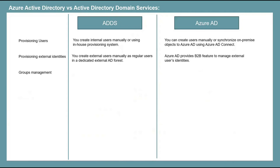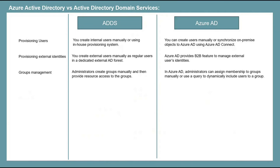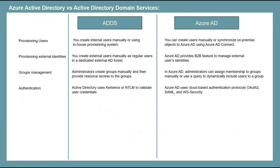In on-premise Active Directory, administrators add members to groups manually and then resources are assigned to those groups. But in Azure Active Directory, administrators can use a query to dynamically include users in groups. On-premise Active Directory uses either Kerberos or NTLM to validate user credentials, whereas Azure Active Directory uses cloud-based authentication protocols such as OAuth2, SAML, or WS-Security.